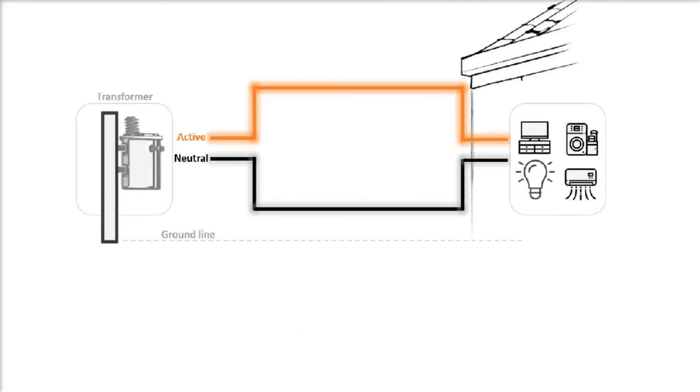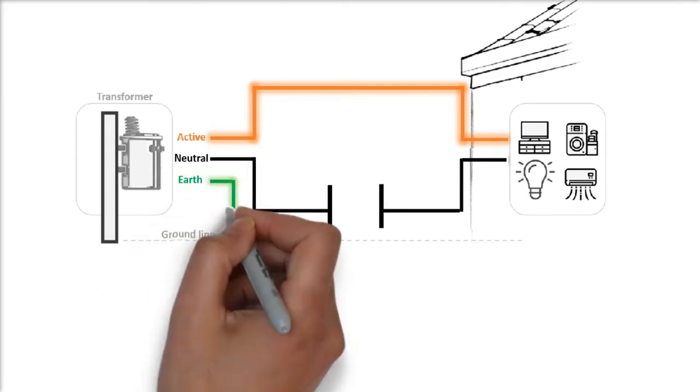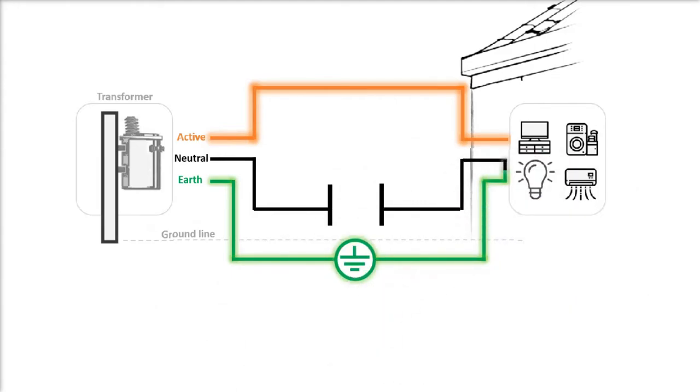Now, what happens if the neutral is broken or disconnected, breaking the circuit? Well, the network is designed so that the neutral is connected to a backup return path through the ground by using the earth. And in this instance, the home will still have electricity powering its appliances.